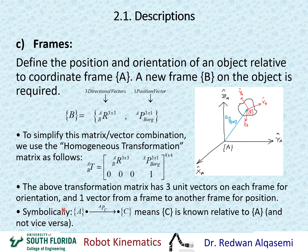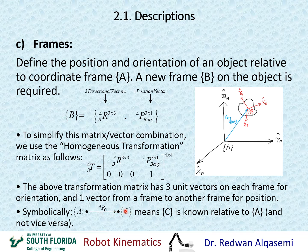Symbolically, if this is frame A and this is frame C, we draw a line from A to C with the arrowhead pointing towards C — meaning we're describing C relative to A. This means C is known relative to A, and not vice versa. Whenever the arrowhead points toward C, I write it as A-superscript P-subscript C, where A is the reference frame.